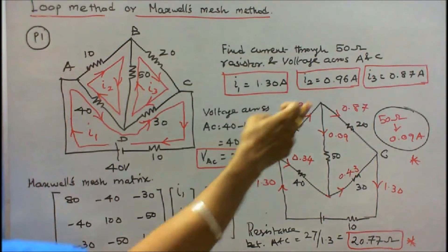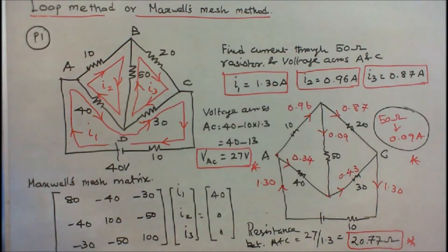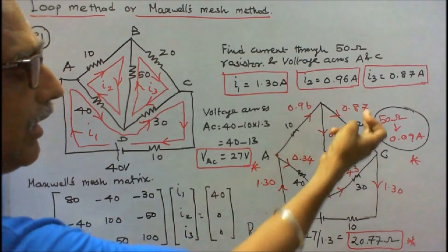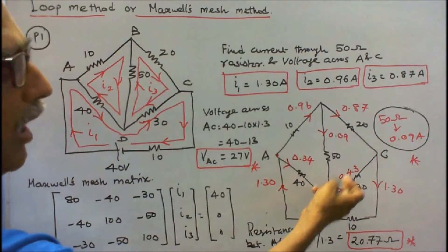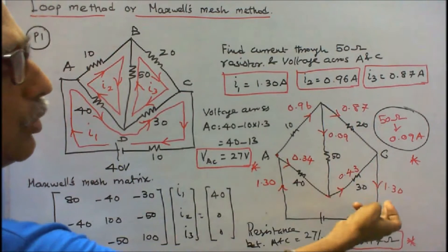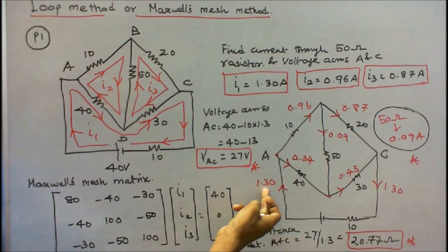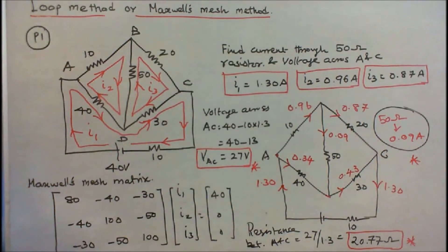The current flow through the resistor is 0.09 amps. The current towards point C is 0.87 amps, and 0.87 plus 0.43 equals 1.3. Current towards the junction is 1.3 and current leaving the junction is 1.3, so Kirchhoff's current law is verified.